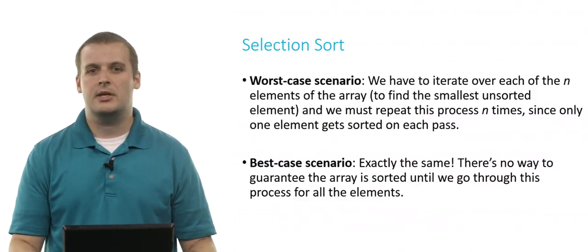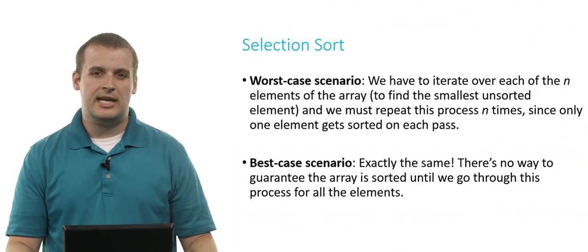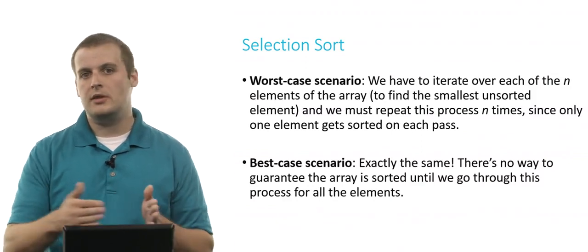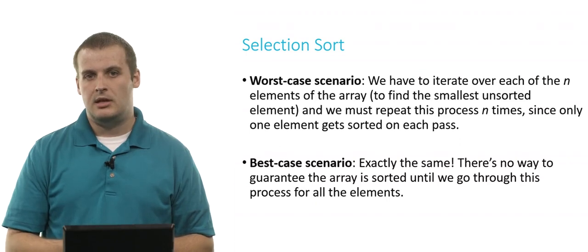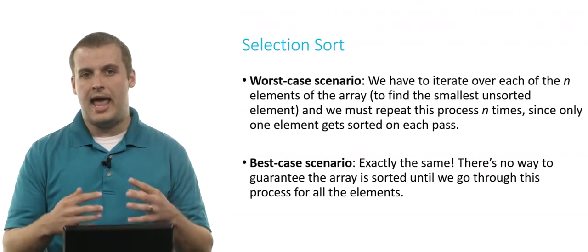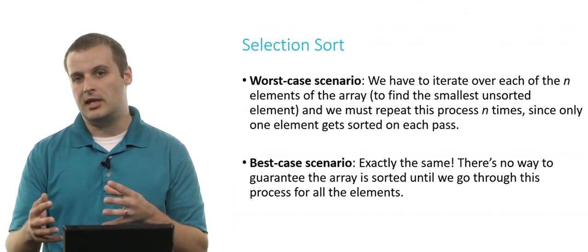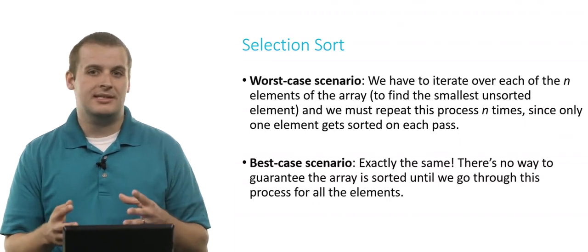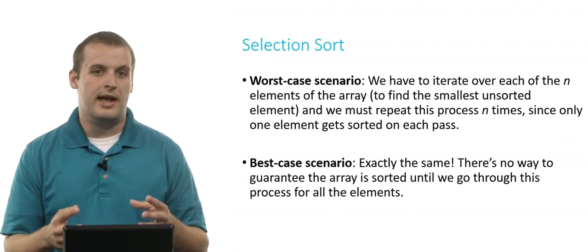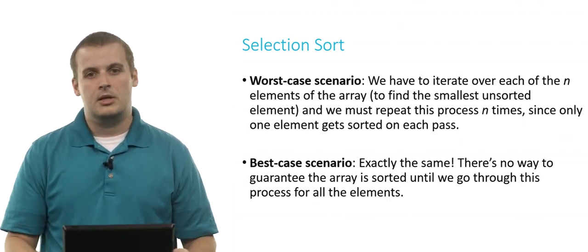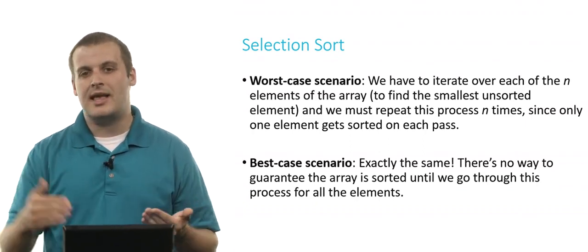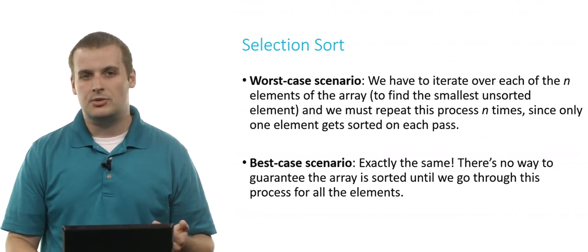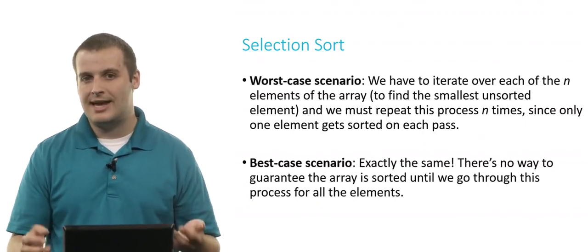So what's the worst case scenario here? Well, in the absolute worst case, we have to look over all of the elements of the array to find the smallest unsorted element, and we have to repeat this process n times, once for each element of the array, because we only sort one element at a time. What's the best case scenario? Well, it's exactly the same. We actually have to still step through every single element of the array in order to confirm that it is, in fact, the smallest element.